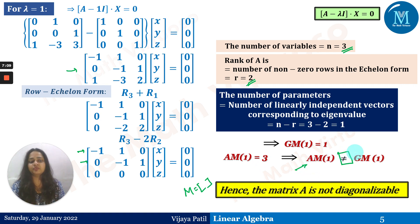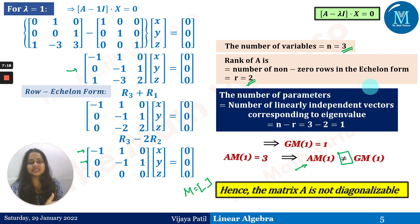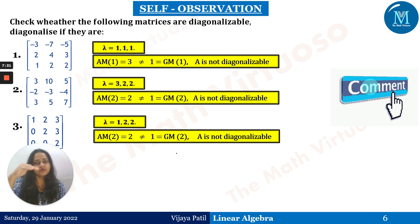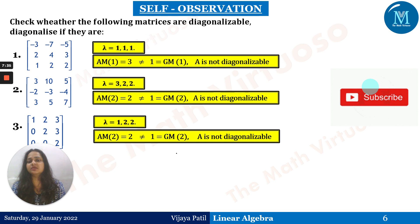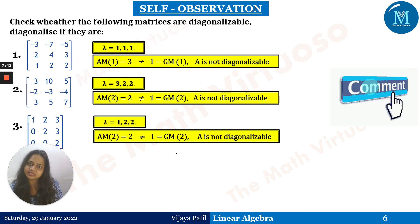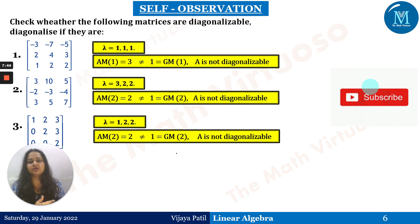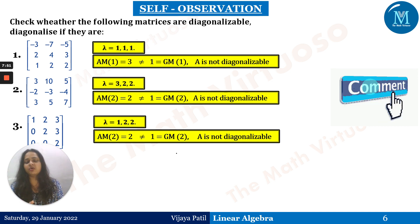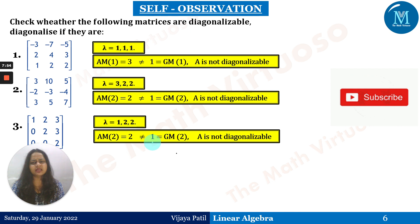In general, if the algebraic multiplicity is not equal to the geometric multiplicity for all eigenvalues of a given matrix A, then the matrix is non-diagonalizable. For further reference, check the previous videos via the i-button or the channel playlist on linear algebra, which covers everything from types of matrices through these concepts, suitable for GATE, TOEFL, and CAT examinations.